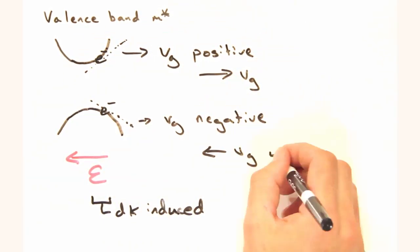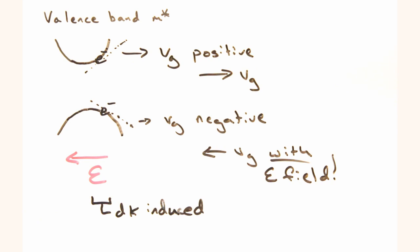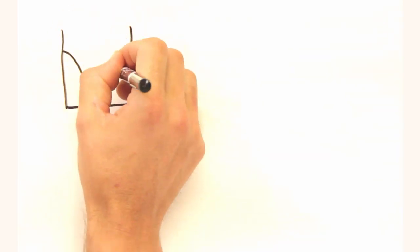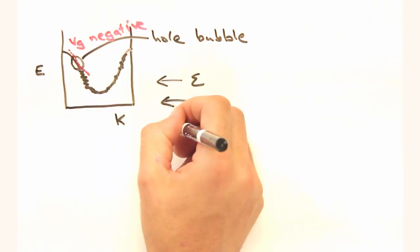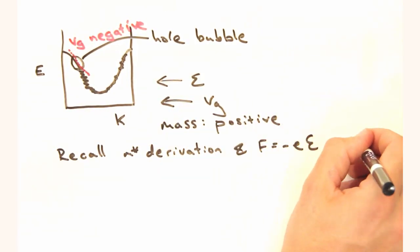So the electrons have a net momentum, dk, parallel to the external E field, whereas in the conduction band, their momentum was anti-parallel. Or you could view this as the whole bubble acts like it has positive charge and moves in the direction you would expect given the applied E field.